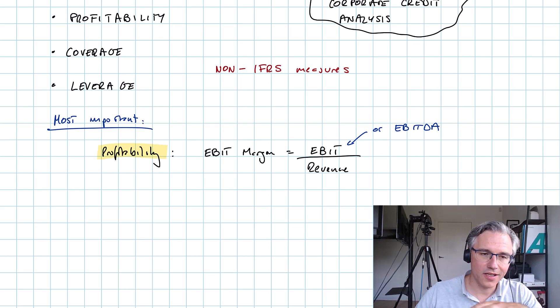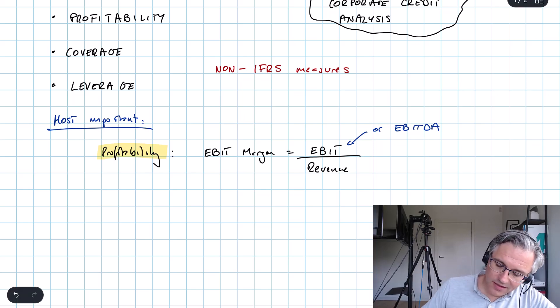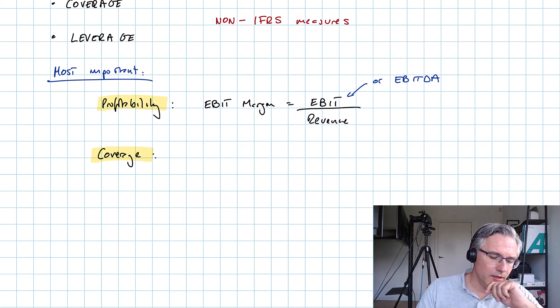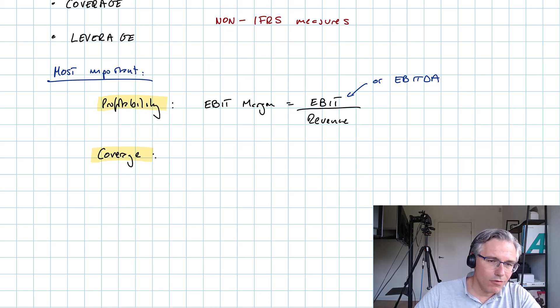Now the next group, coverage ratios, slightly more tricky because these are somewhat less known. Once again, lots of different variants of how we measure coverage exist. However, one ratio which your curriculum focuses on here is the relationship of EBIT, so once again earnings before interest and taxes or simply operating income, operating profit, and the interest expense.